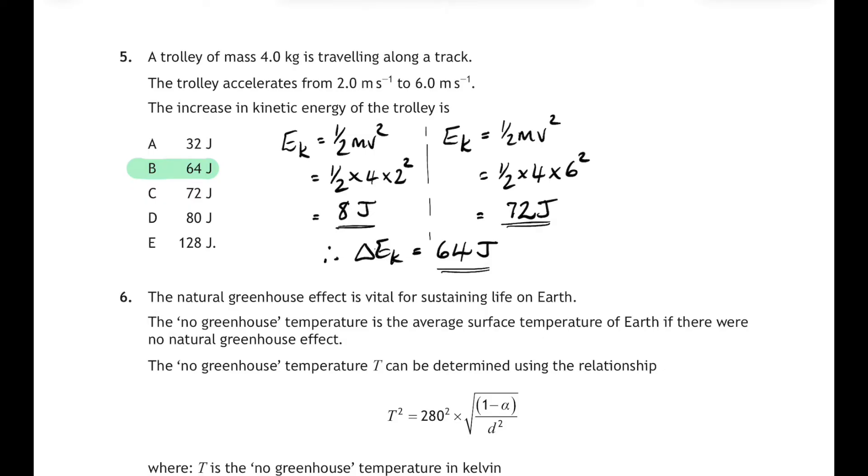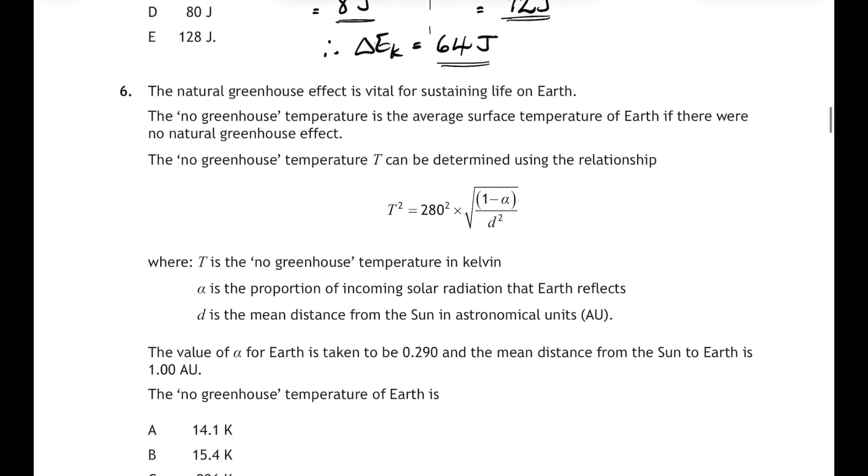Now be careful here, because you might be tempted to say, well, the speed increases by four meters per second. And if you sub the four in for the change in velocity, then that will give you a wrong answer for the change in kinetic energy. You've got to work out kinetic energy before, kinetic energy afterwards, and the difference between the two: 64 joules, 5B.